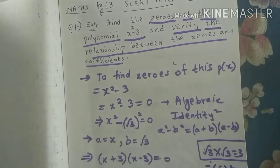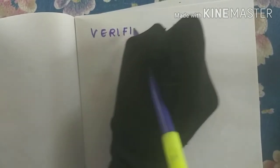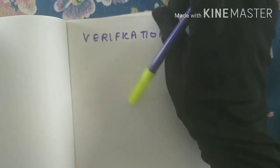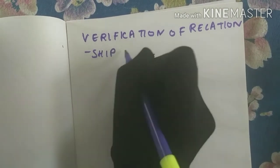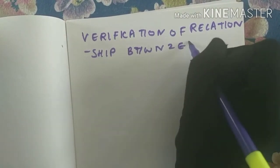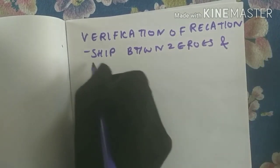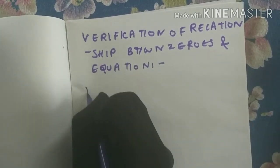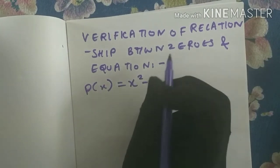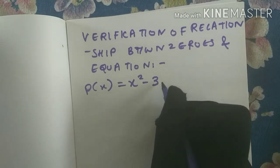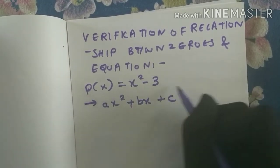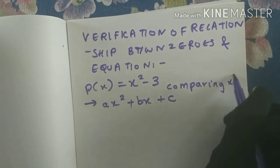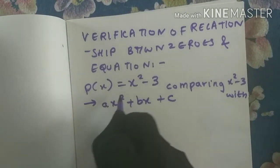Now I need to verify the relationship between the zeros and coefficients. For verification, I write the equation: p(x) equals x squared minus 3. In order to find the relationship between zeros and coefficients, I need to compare this equation with the standard form of a quadratic polynomial: ax squared plus bx plus c.